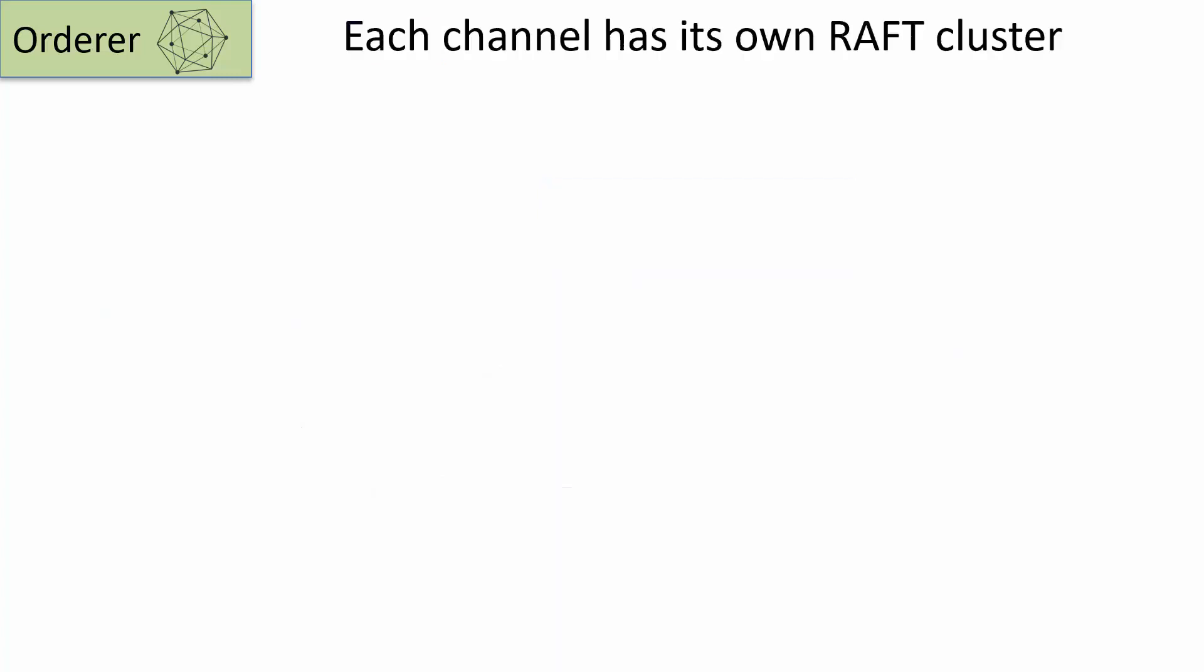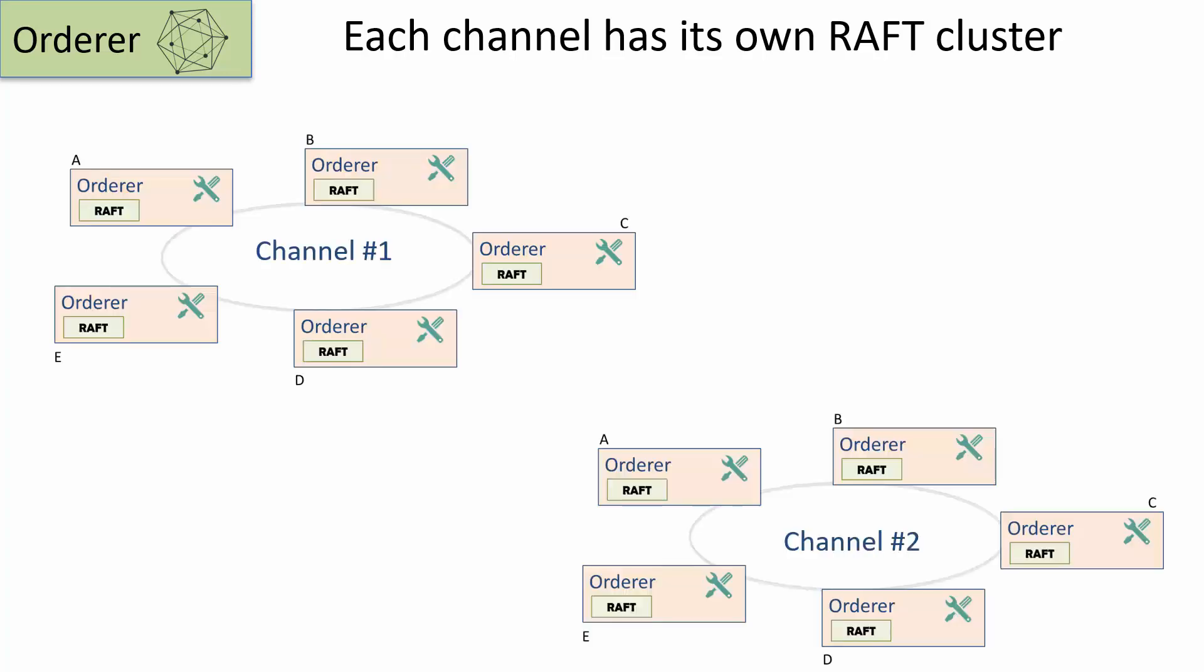One important point to note is that for each channel in the fabric network, there is a raft cluster which operates independent of the raft cluster for other channels. Let's say you have a network which has five orderer instances. So for channel one, there will be a raft cluster and for channel two, there will be a raft cluster which is independent of the raft cluster for channel one.